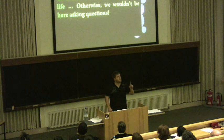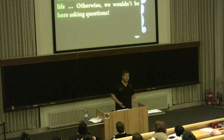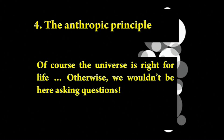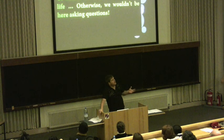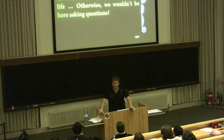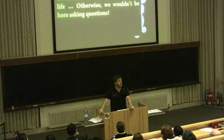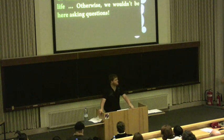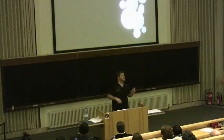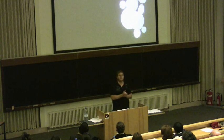Number four: the anthropic principle. This is what this whole thing is usually called. Basically, of course the universe is right for life, otherwise we wouldn't be here asking questions. It's a very simple idea: if there's any life anywhere, it's always going to observe that things are pretty good for life around it. So how can you be surprised that you're alive and observing a universe that lets you be alive? My response to this is a very famous analogy. Suppose you're facing a firing squad...